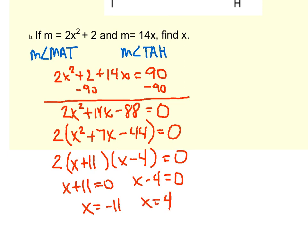Here is the point in the problem where we have to remember that we're dealing with angle measures. If I were to plug negative 11 back in here for x, I would get a negative angle measure for angle TAH, which doesn't make any sense. So we're going to ignore that negative 11 because it doesn't make sense for this problem, and we would just give our answer as x equals 4.